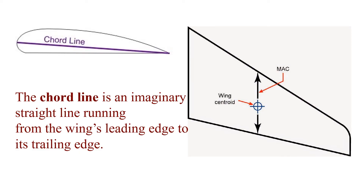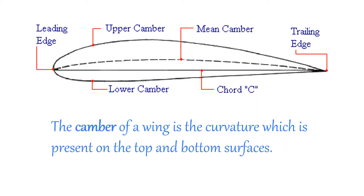The wing chord is the distance between the front or leading edge of the wing and the back or trailing edge. In a tapered wing, the chord varies along the length of the wing, in which case we usually refer to it as the mean aerodynamic chord. The camber of the wing is the curvature of the top and bottom of the wing. The top of the wing generally has more camber to aid in the generation of lift. The mean camber is the difference in the distance between the upper and lower camber relative to the chord line.